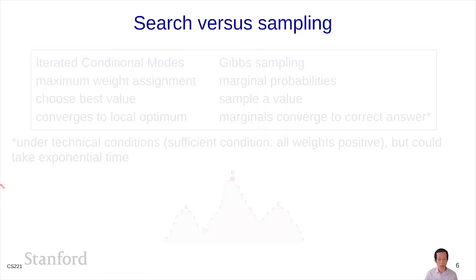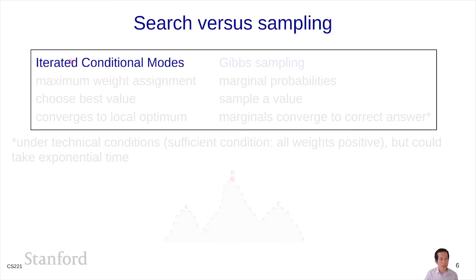Let me just conclude here. Actually, one thing before we conclude. Let me try to go back to iterated conditional modes and compare that with Gibbs sampling. Both of them have the same kind of template. You're working with complete assignments, and you're going through each variable and updating the assignment to that variable one at a time. But there's a few differences here.